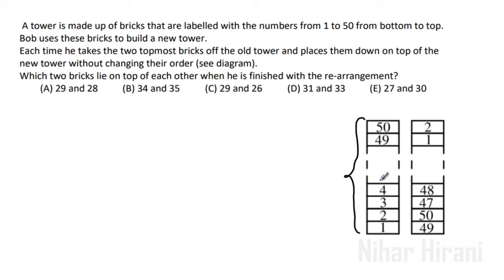Now what Bob is doing, Bob will take away these two numbers and he will paste it like this: 2, 1. Then he will take away two numbers like this: 4, 3. You can see he took 2, 1, pasted here, then 4, 3, and it goes on till 50. So let us do that arrangement very quickly.